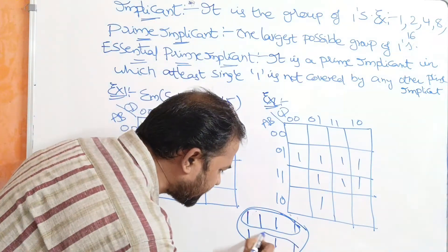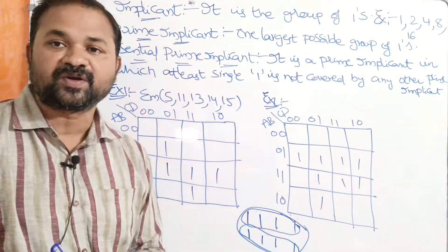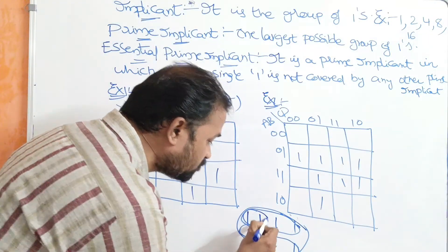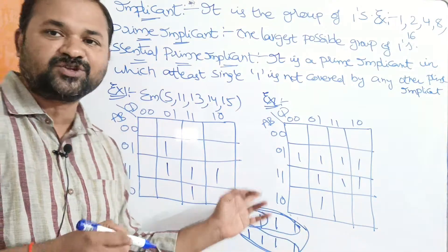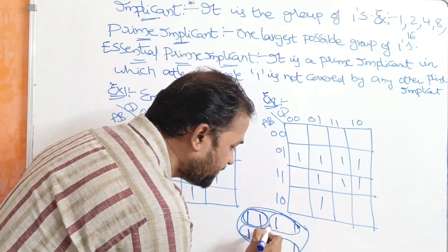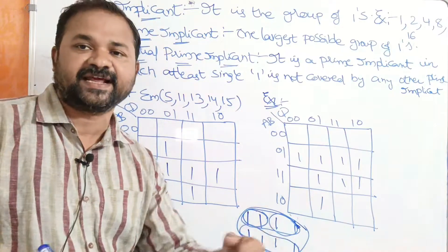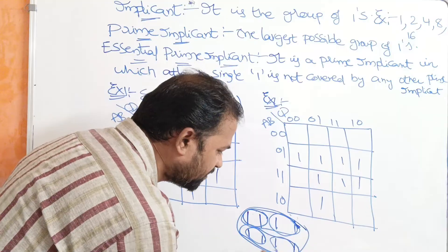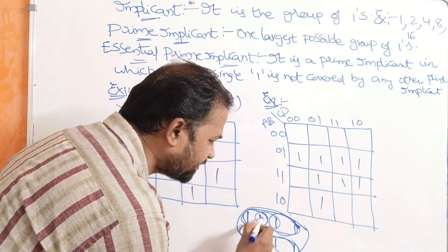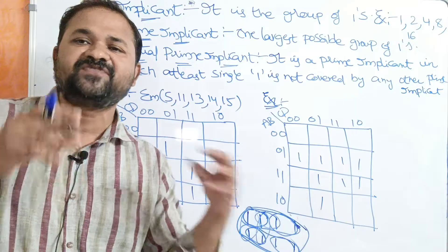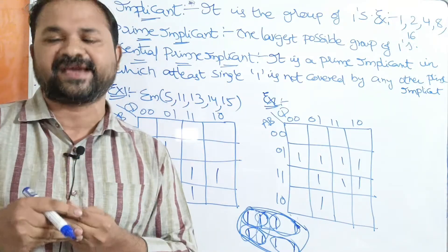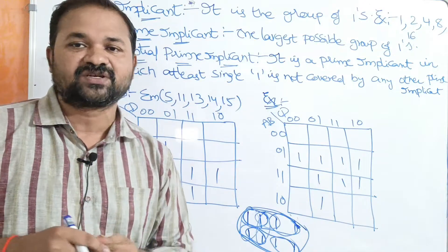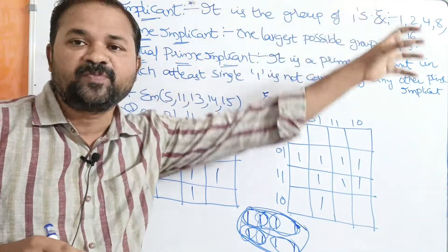Next, we can make these four cells as another group, so this group will become a third Implicant. Next, we can make these two cells as one group, so this group will become an Implicant. Next, we can make these two cells as another group, so this group will become an Implicant. Likewise, we can create n number of Implicants.